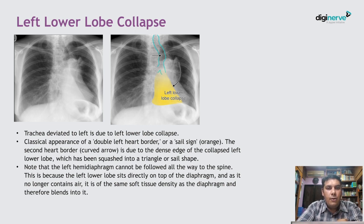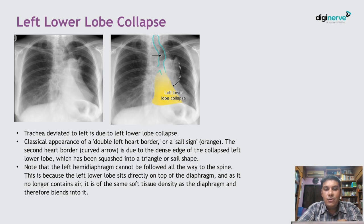When left lower lobe collapse happens, the trachea is deviated to the left and there is a classic appearance of a double left heart border — a sail sign. The second heart border is due to the dense edge of the collapsed left lower lobe, which gives rise to a triangular or sail shape. The left hemidiaphragm cannot be followed all the way to the spine because the left lower lobe sits directly on top of the diaphragm, and as it no longer contains air, it is of the same soft tissue density as the diaphragm and blends into it.